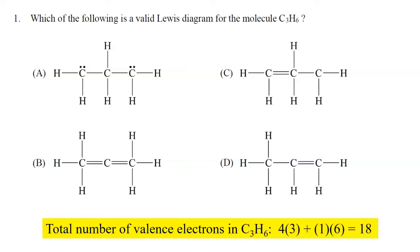Now I'll take a look at choice A and count the total number of valence electrons used to create that Lewis diagram. Counting through, I get a total of 20 valence electrons. So choice A can be eliminated because they used too many valence electrons to create that Lewis diagram.